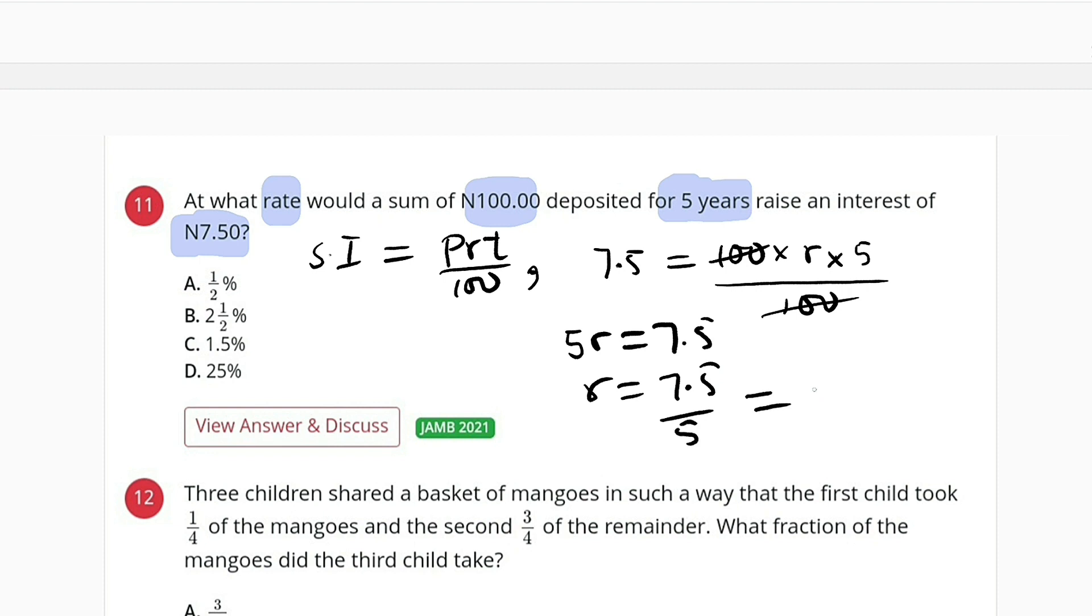This equals 1.5, and 1.5 is the same thing as 1 and 1 over 2 percent. We have it as option C: 1.5%.